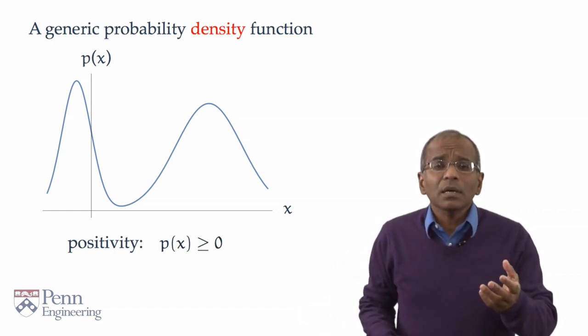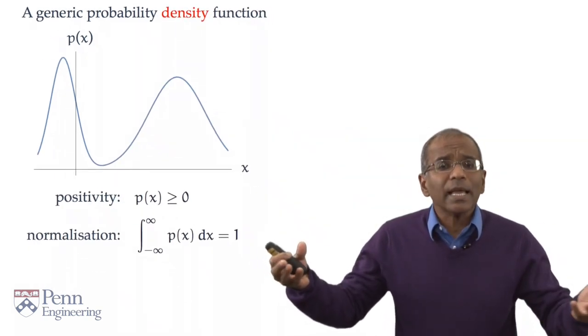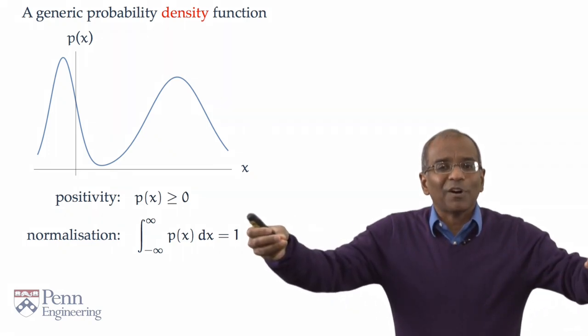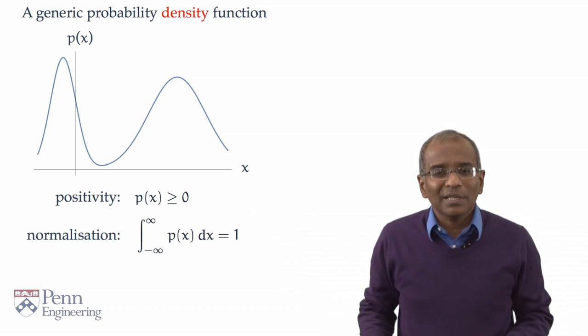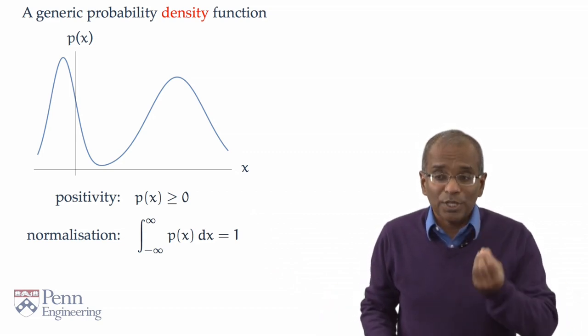And it has to be properly normalized. What does normalization mean? In this case, that the limiting sum, the integral of the function is unit. Another way of thinking about it is that the area under the curve is unit.